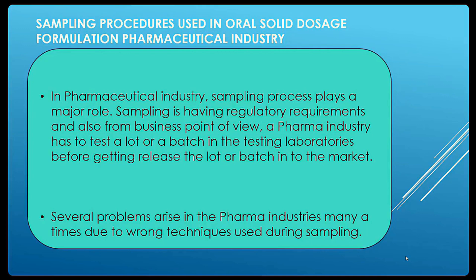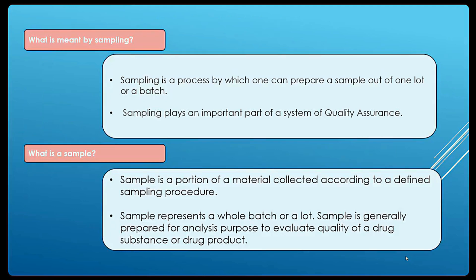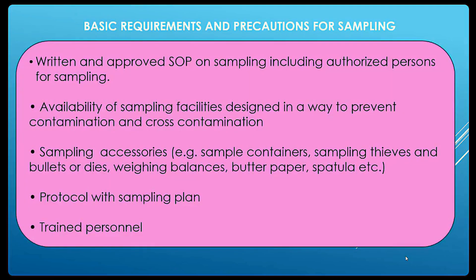If sampling is not done correctly, many problems can arise. Even if an IPQA person performs sampling but doesn't follow the SOP or use proper techniques, several problems can result. Sampling is the process by which one prepares a sample out of a complete lot or batch. That sample — for example, 20 grams — represents the entire 100 kg batch size. It is prepared for analysis to determine the quality of the drug product.